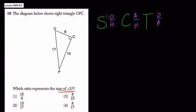SOH is for sine, or opposite over hypotenuse. CAH is for cosine, or adjacent over hypotenuse. And TOA is for tangent, which is the opposite over the adjacent.